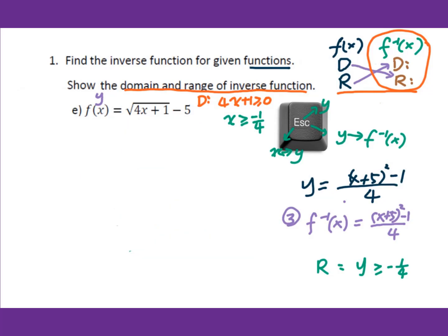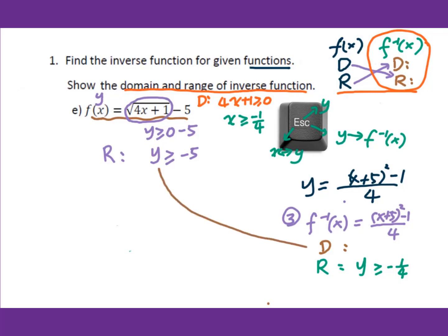For the range of the square root function, the square root is always greater than or equal to 0, and subtracting 5 gives y greater than or equal to negative 5. That is the range of the original function, which becomes the domain of the inverse function: x greater than or equal to negative 5. The domain of the original function (x ≥ -1/4) becomes the range of the inverse function (y ≥ -1/4).